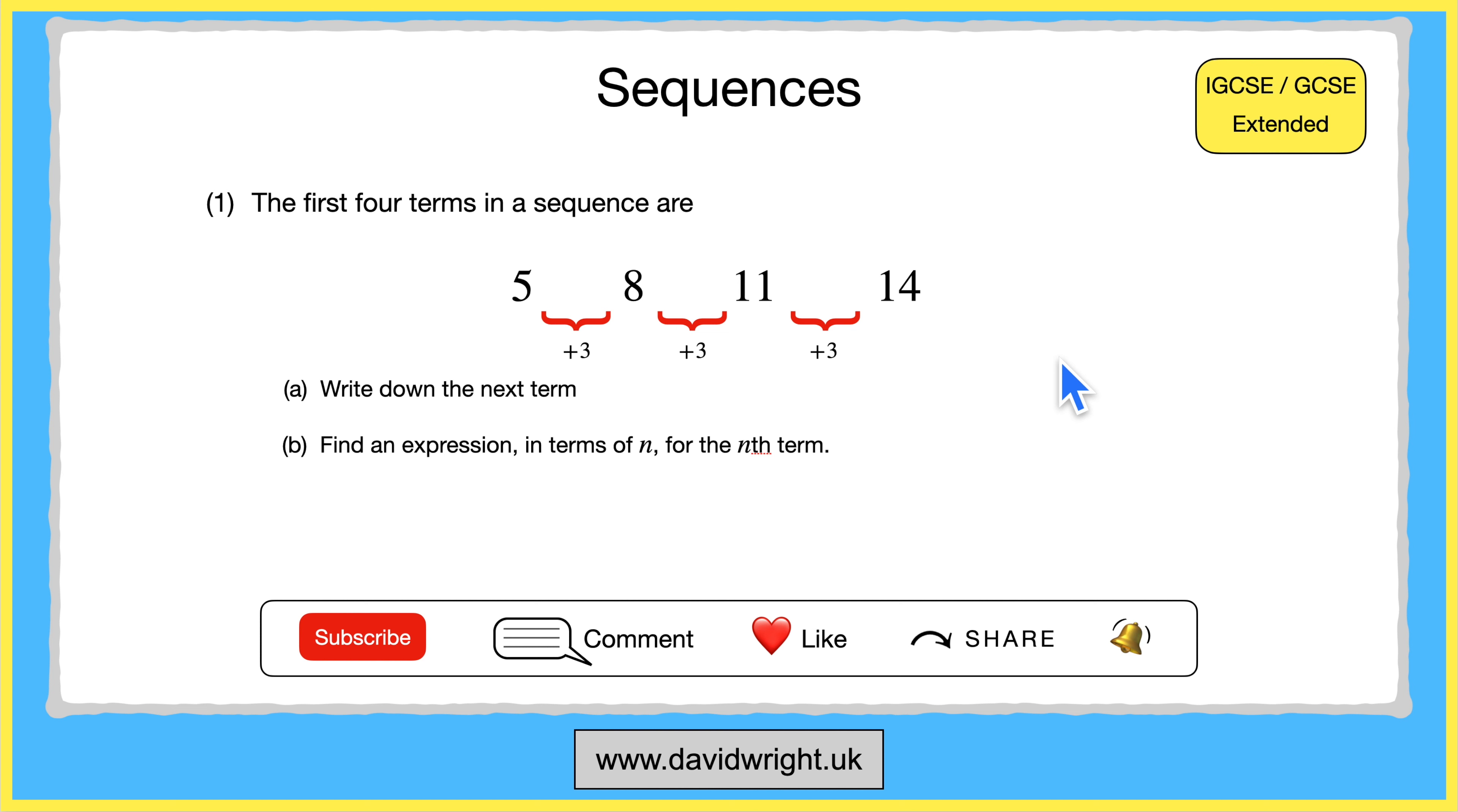So to find the next term we simply need to add 3 onto 14 which is 17. So when we are asked for the next term we can write down that it is 17.